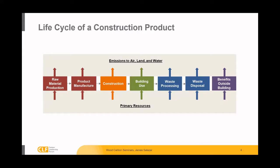Those materials then go on to a manufacturing stage, where they're converted into a construction product. Those products then go into the construction of a whole building or infrastructure project. You then get the use of that building, any replacement or maintenance required during the life cycle of the building. Then once the building has reached its end of life, the materials are processed where there is waste diversion for things like recycling and eventual disposal. There's also a category to identify benefits outside of the building life cycle, like open-loop recycling, where materials flow out and have some influence in the life cycle of a different product.